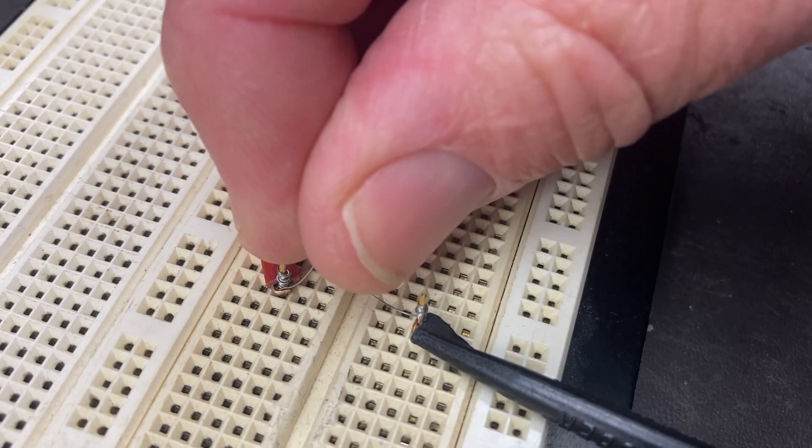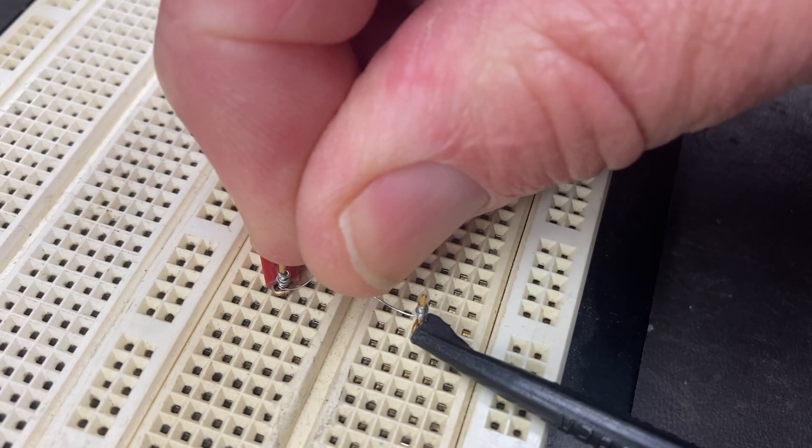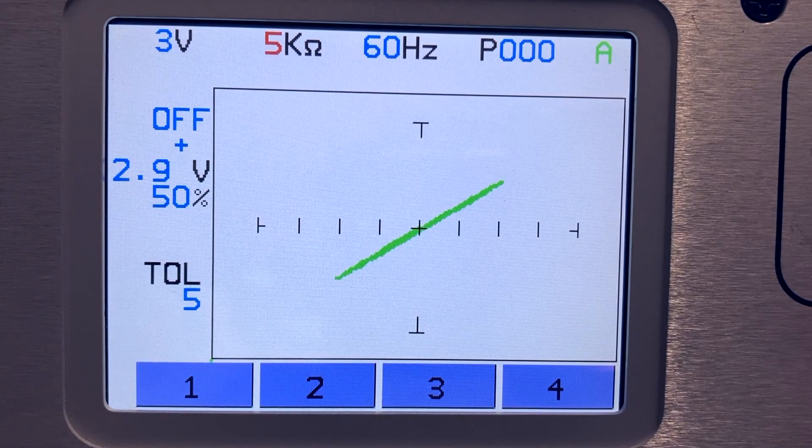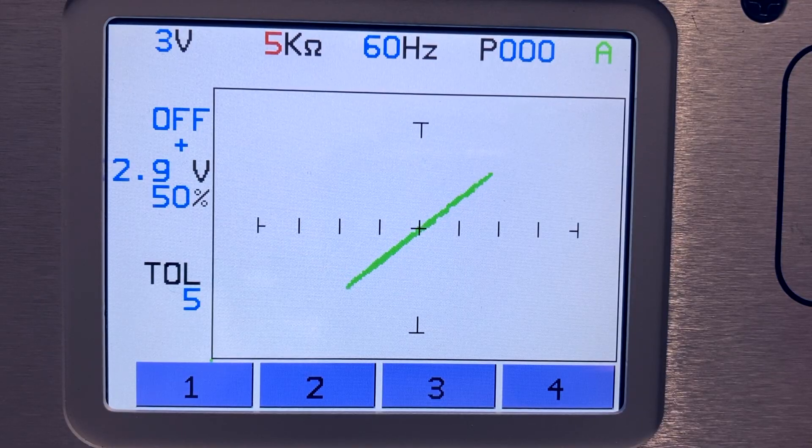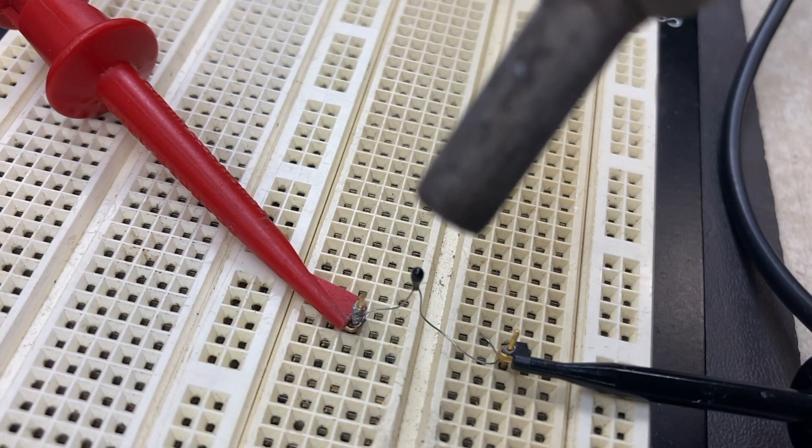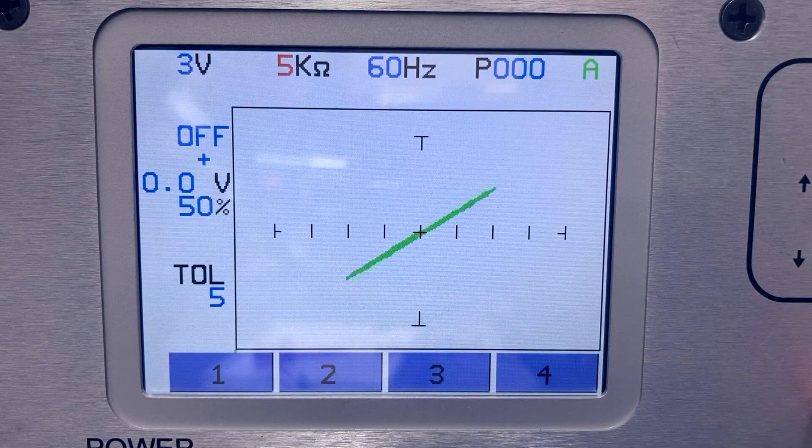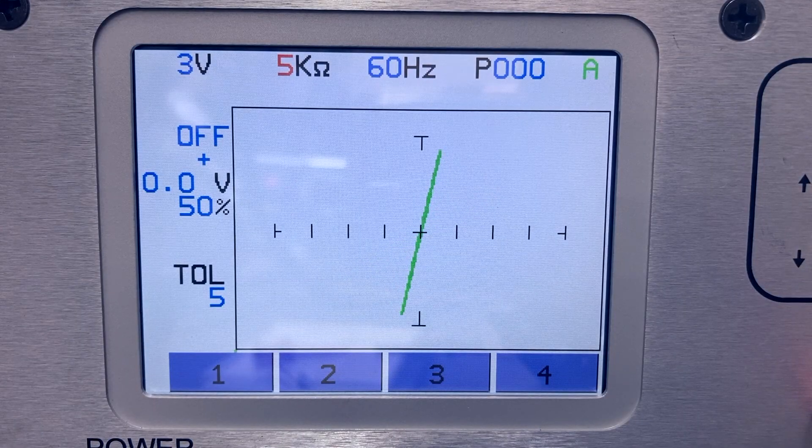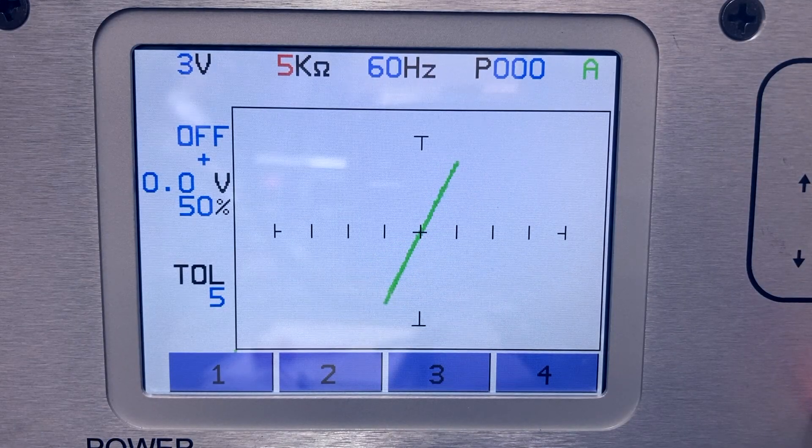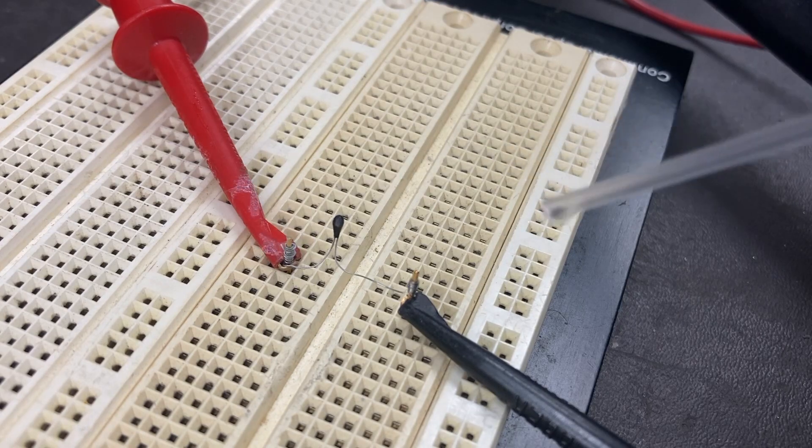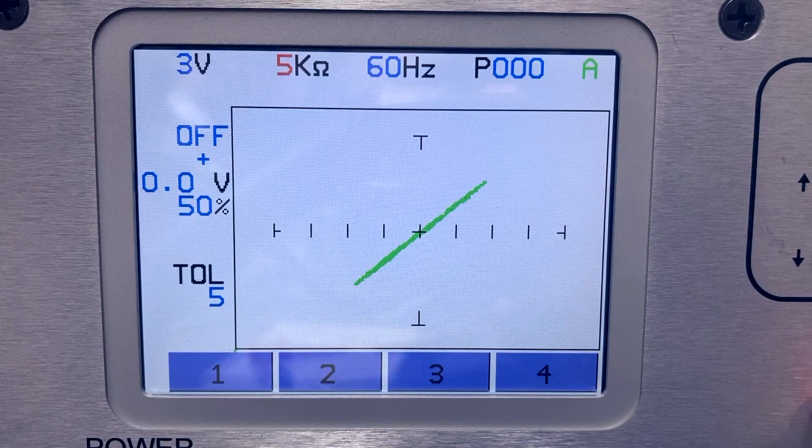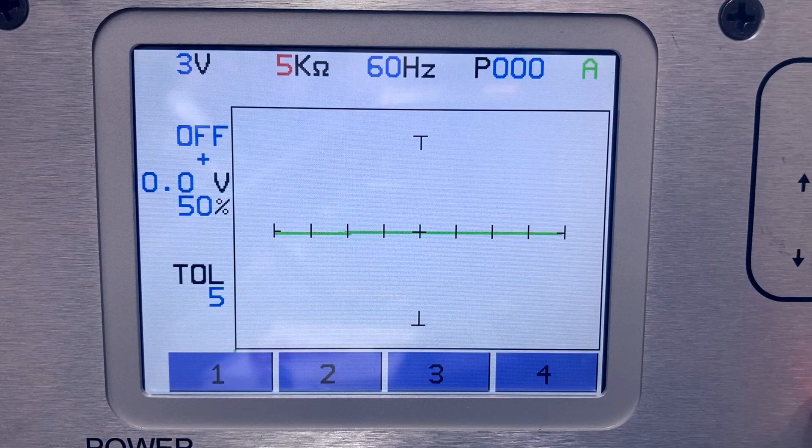If you pinch the thermistor between your fingers to warm it slightly, you see a small change in the signature angle. Using a heat gun to warm the thermistor shows a more severe change as the resistance decreases. A brief application of freeze spray and you will see the opposite reaction as the thermistor increases in resistance.